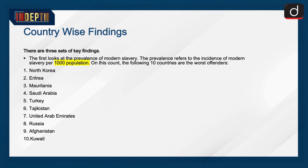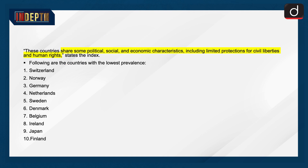Country-wise findings fall into three sets of key findings. The first looks at the prevalence of modern slavery, referring to the incidence per 1,000 population. On this count, the following 10 countries are the worst offenders: North Korea, Eritrea, Mauritania, Saudi Arabia, Turkey, Tajikistan, United Arab Emirates, Russia, Afghanistan, and Kuwait. These countries share political, social, and economic characteristics, including limited protections for civil liberties and human rights, states the index.